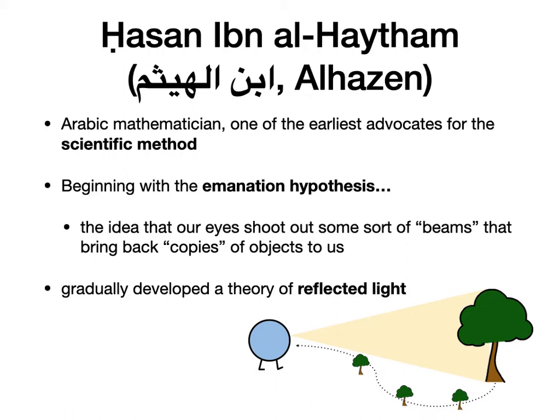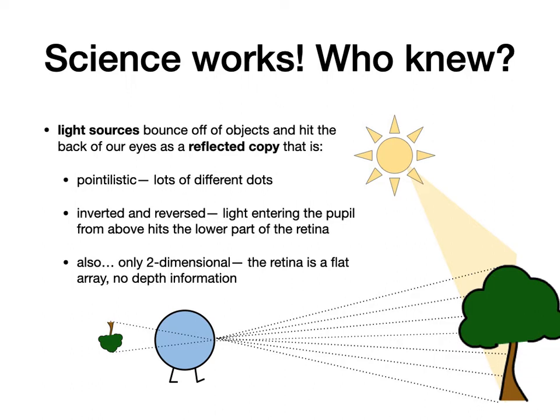Hassan ibn al-Haytham — I probably messed up most of those syllables, but that's where we're going. He was an Arabic mathematician, one of the earliest advocates for the scientific method. He investigated the emanation hypothesis — the idea that our eyes shoot out beams that bring back copies of objects — recognized it was silly, and developed the theory of reflected light. Light sources bounce off objects and hit the back of our eyes as a reflected copy.